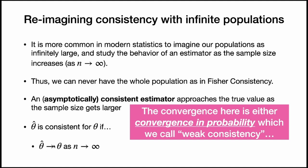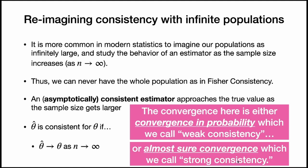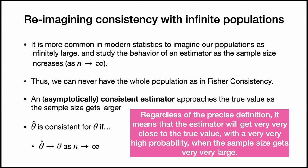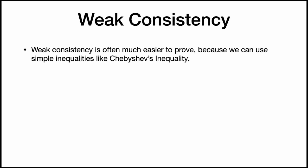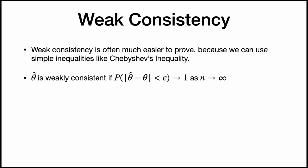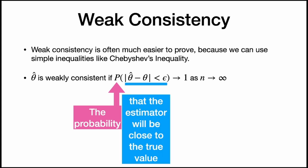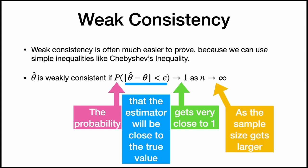What we mean by "approaches" here is either convergence in probability, which we call weak consistency, or almost sure convergence, which we call strong consistency. Weak consistency is often much easier to prove because we can use simple inequalities like Chebyshev's inequality. Convergence in probability means that the probability that theta-hat minus theta is very small gets very close to 1 as the sample size gets larger.